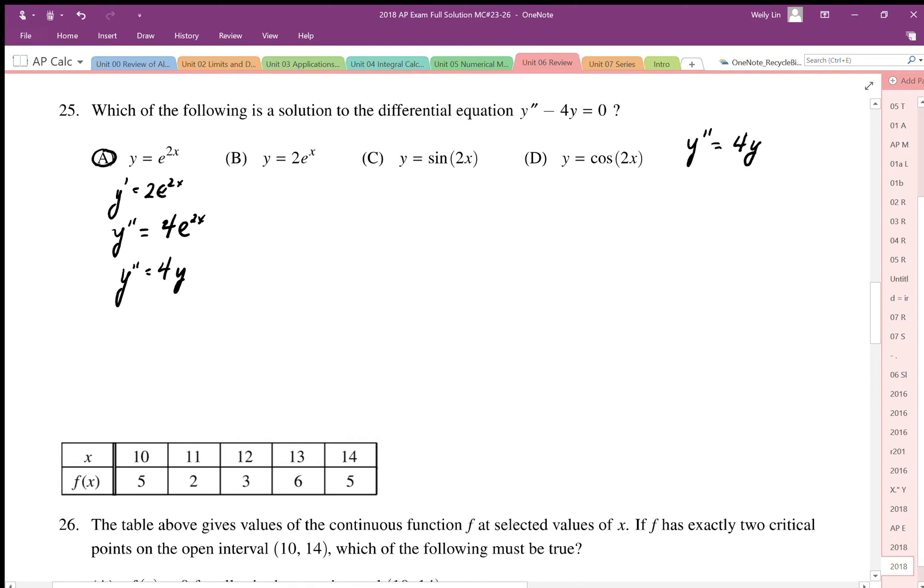Now we can check the other ones as well. If we test the other ones, we're going to get y prime equals 2e to the x, y double prime is equal to 2e to the x. The original function was 2e to the x. It's not 4, it's just going to be 2 again. So the second derivative really is just equal to not 4y, but just y.